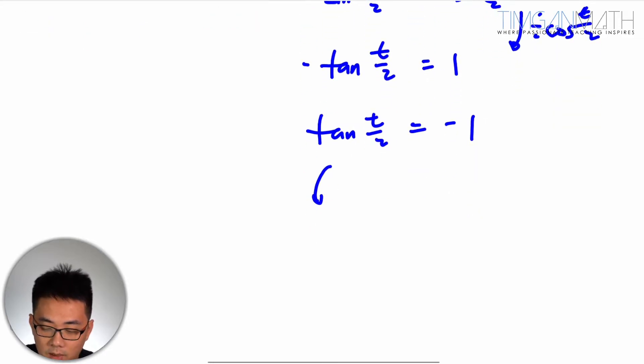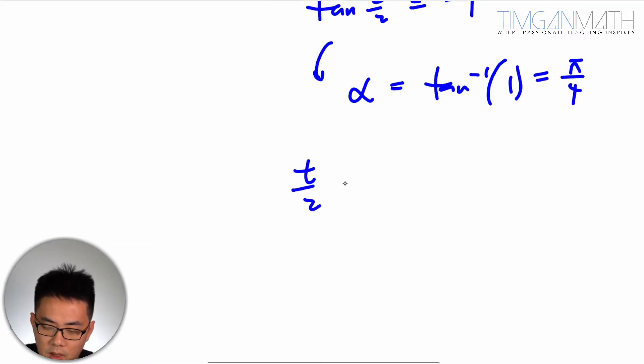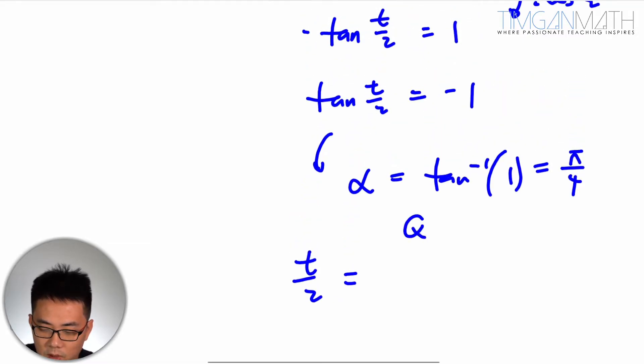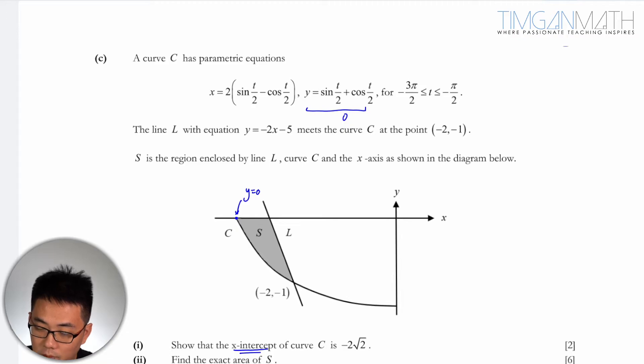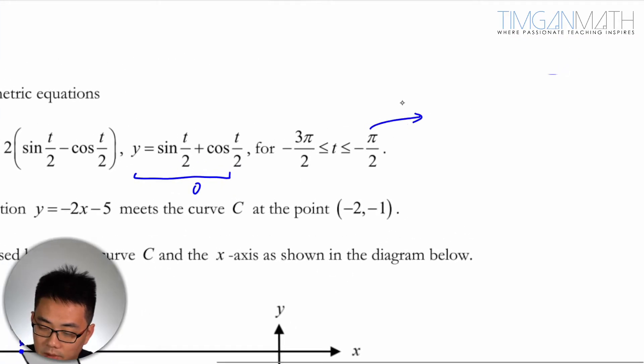So here t/2, the basic angle will just be tangent inverse of positive 1, which is actually just π/4. So t/2 will be, because it's negative 1, it can be in quadrant 2 or quadrant 4. It really depends. But our t is t/2 here, so divide by 2. So t/2 is -3π/4 or -π/4.